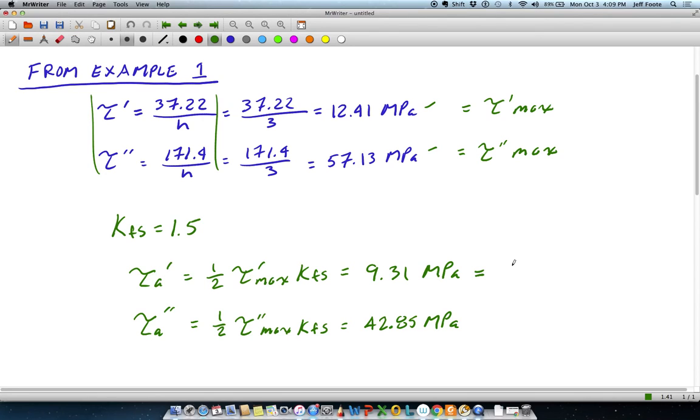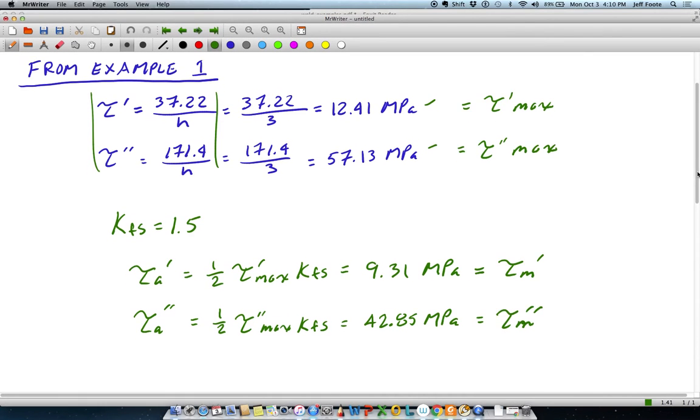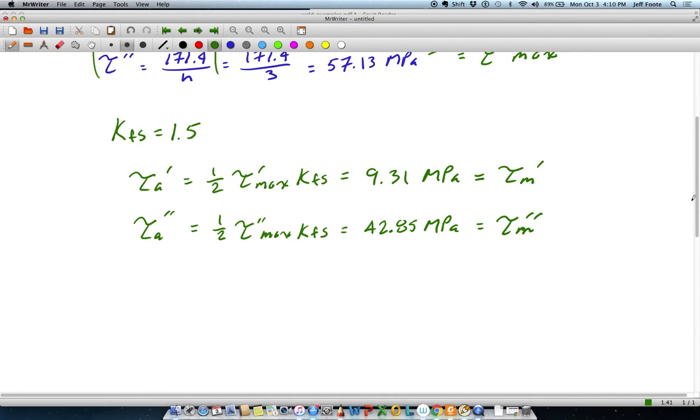And since this is a repeated stress, those are also the same values for the mean stresses. We still want the amplitude, tau alternating is equal to tau n is equal to now 9.31 squared plus 42.85 squared rooted. Which comes out to be 43.85 megapascals.